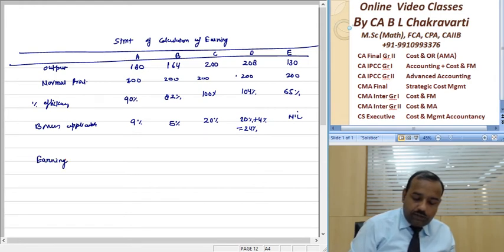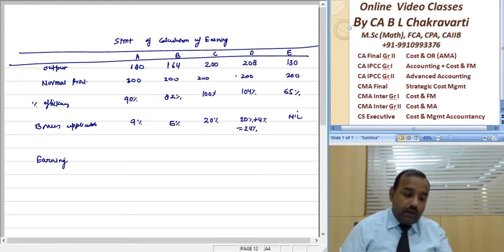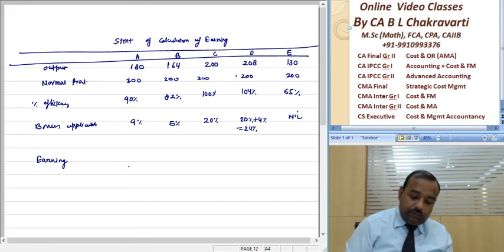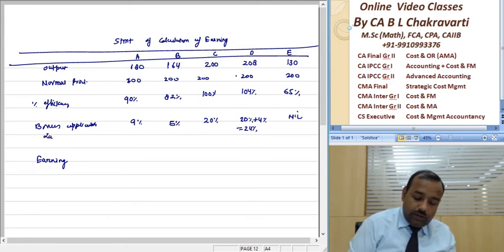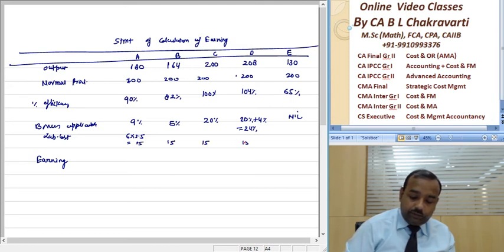What will be the earning? Let's see, one second. What will be the labor cost? 6 into 2.5 equals 15 rupees.